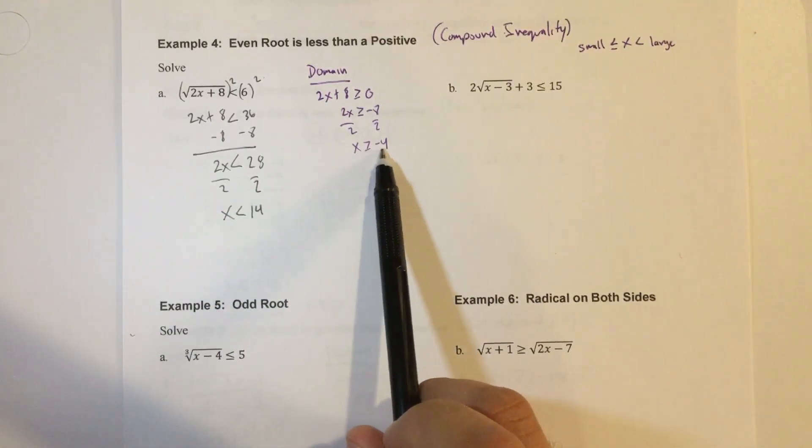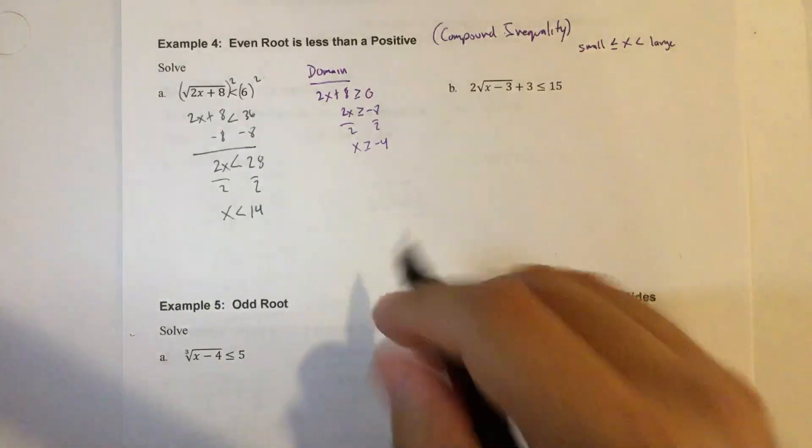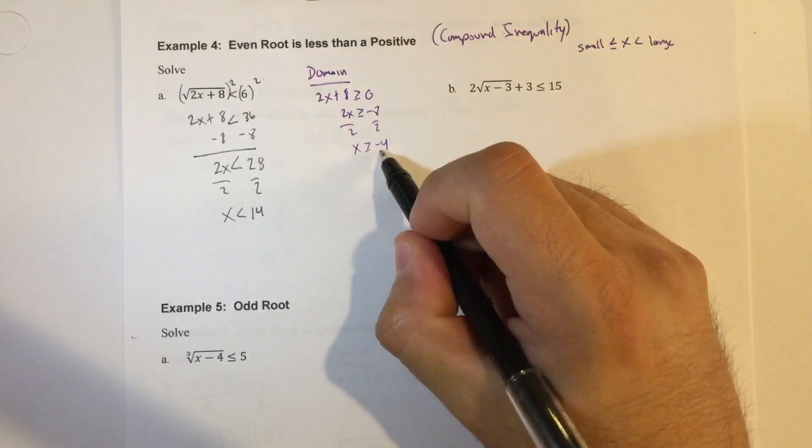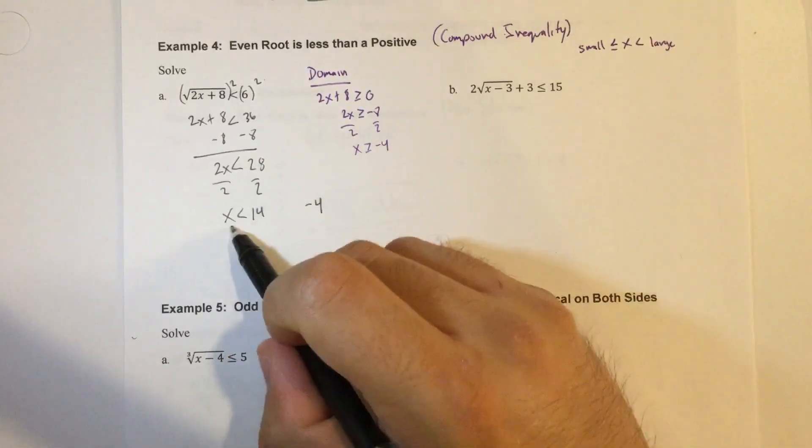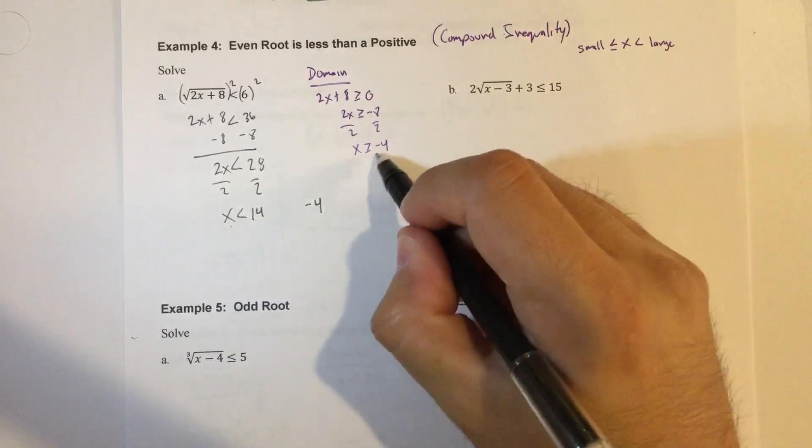So my domain starts at negative 4. So in this case here, my smallest number is negative 4, because it says x is greater than or equal to negative 4. x is less than 14. So we're going to start at negative 4.